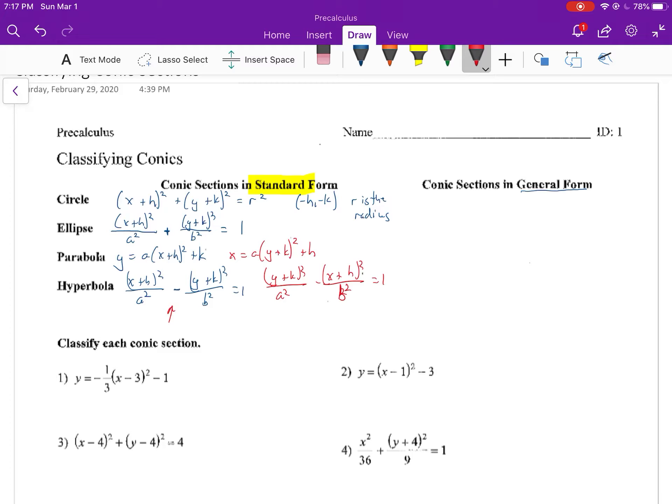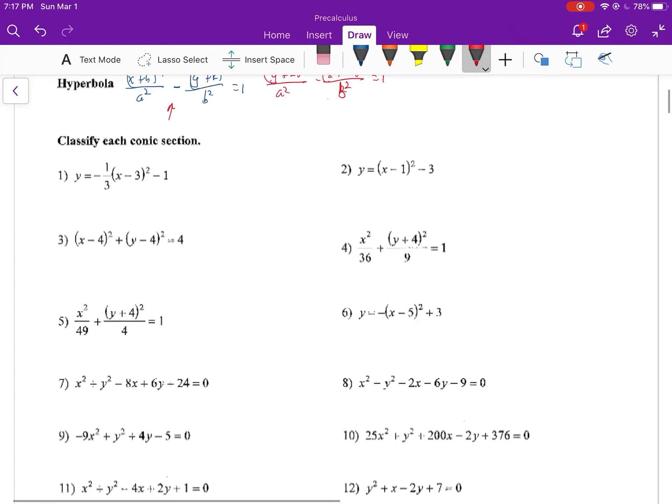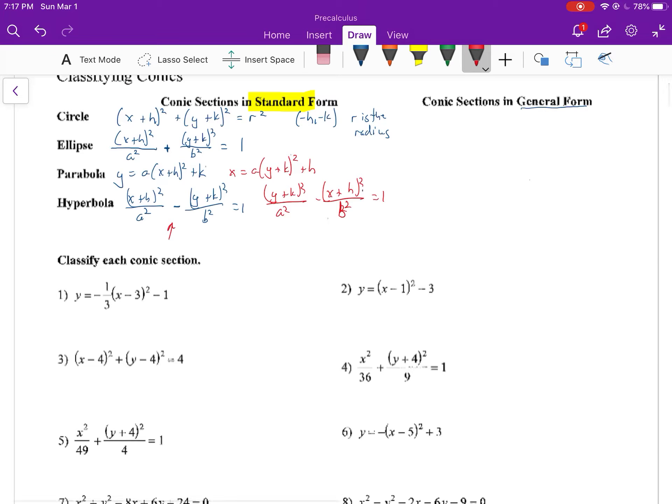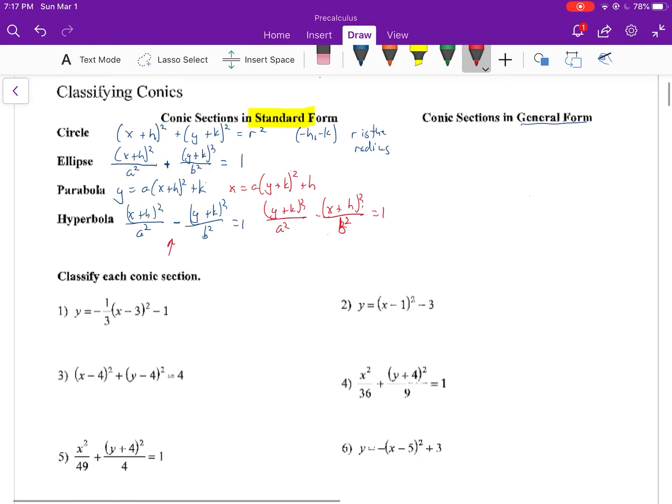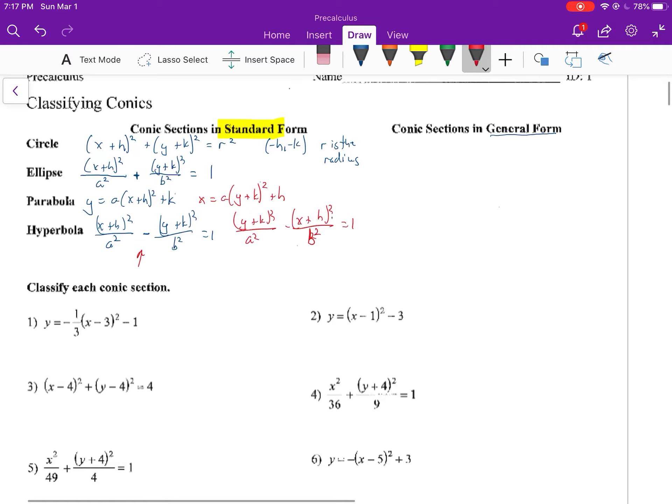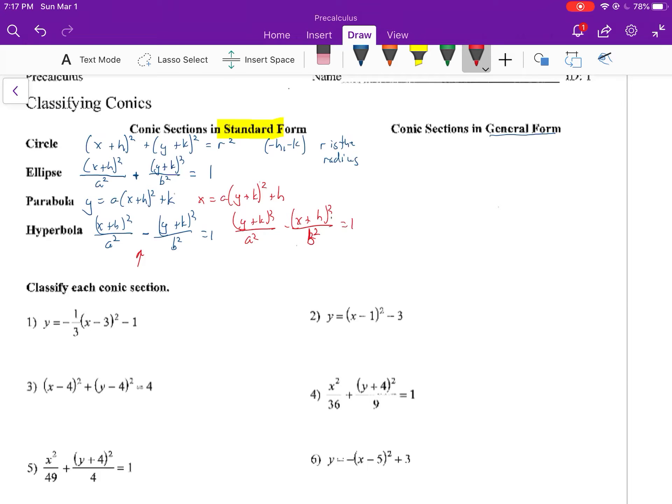So those are the different forms. So as you would look through the first several questions on the sheet, 1 through 6, you should be able to pick out which conic section those equations are representing. The next one talks about general form. So before we do general form or talk about general form, I have to put a general equation up here and talk about this for a minute.